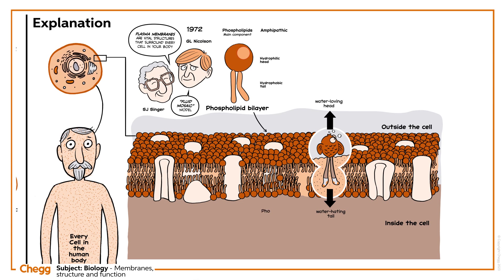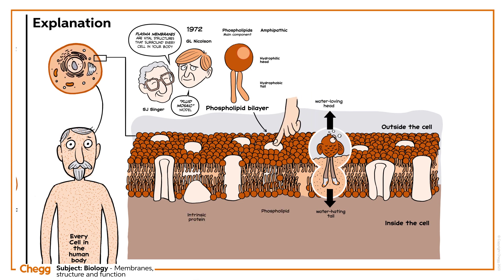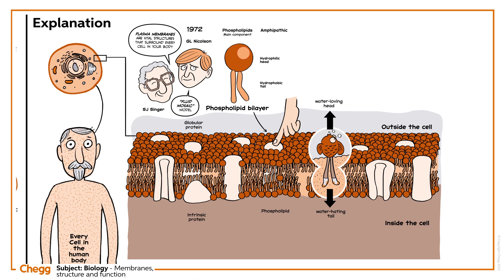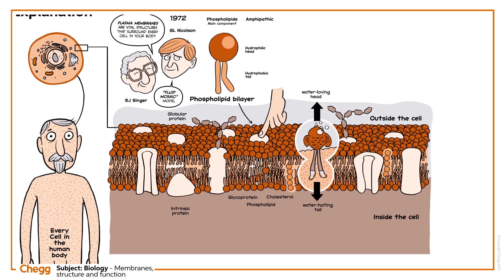Among the phospholipids are proteins, some intrinsic, embedded in the membrane, and some extrinsic, on the outer or inner surface. Carbohydrates are also present, found on the outside surface of cells, either bound to proteins to form glycoproteins, or bound to lipids to form glycolipids.